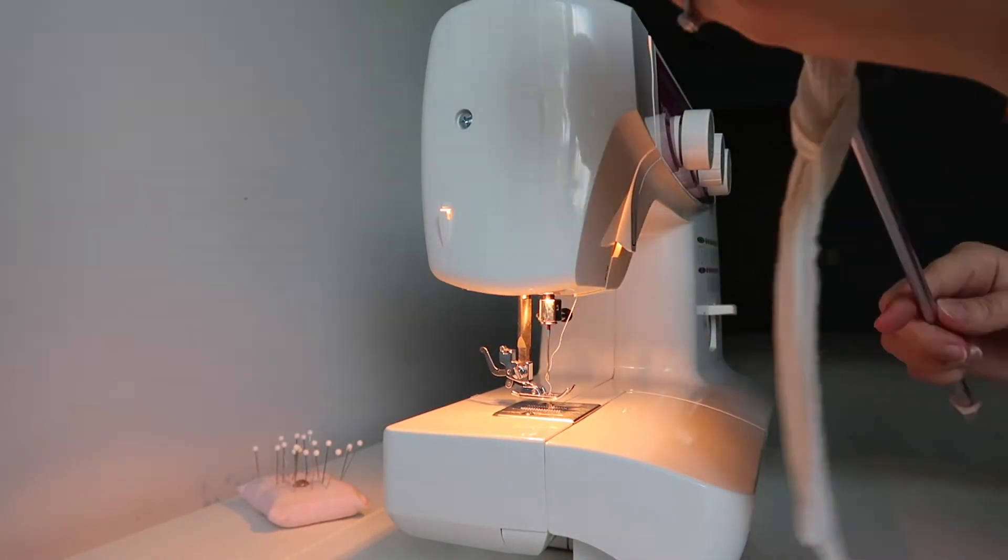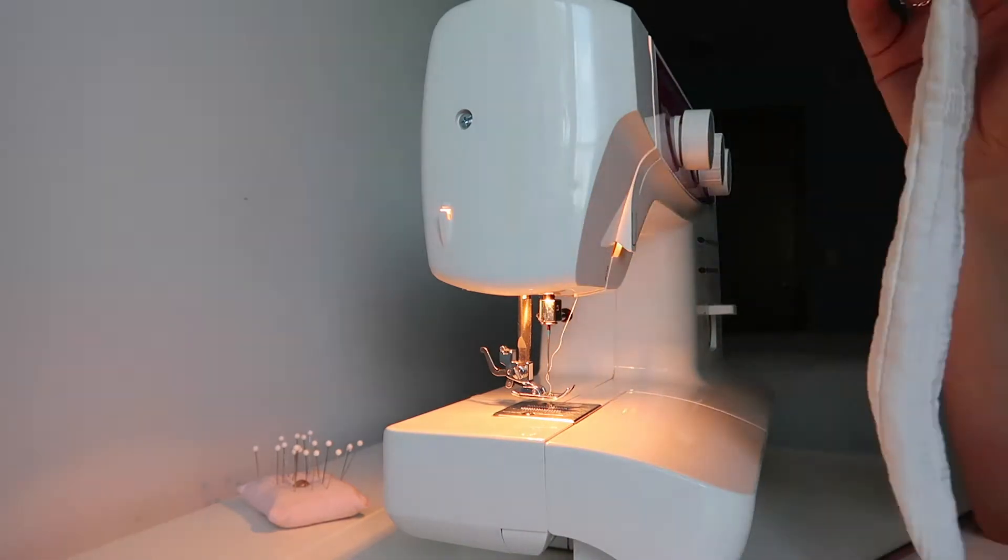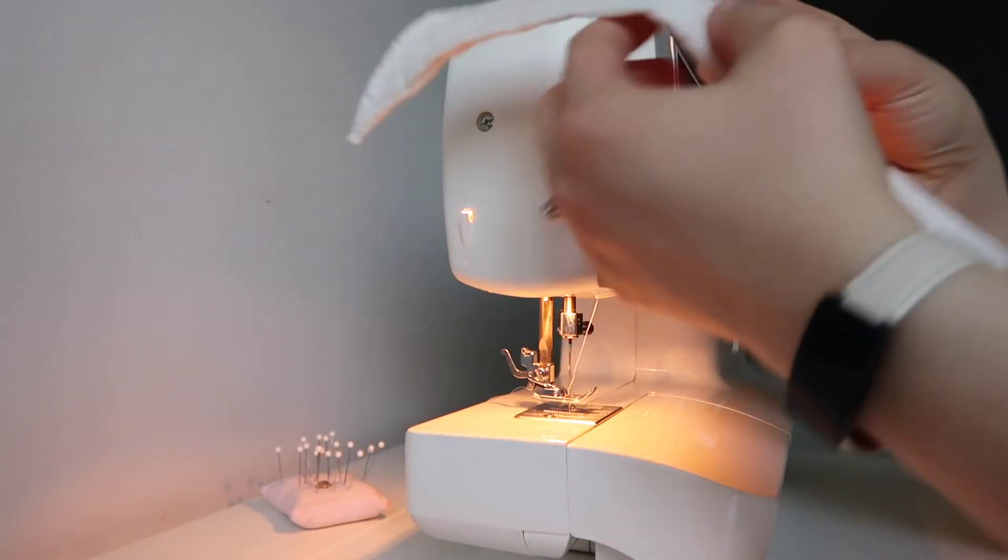Then turn your bow piece right side out and sew up the gap that we left in the middle.